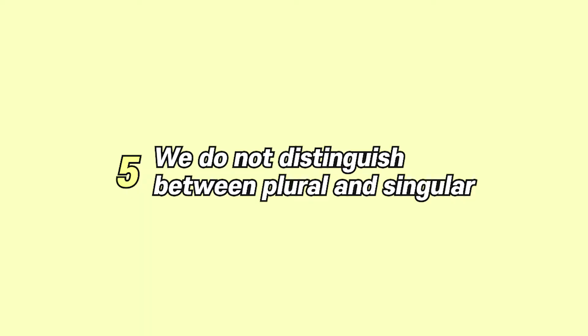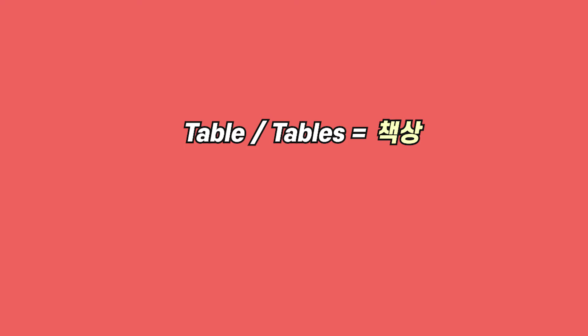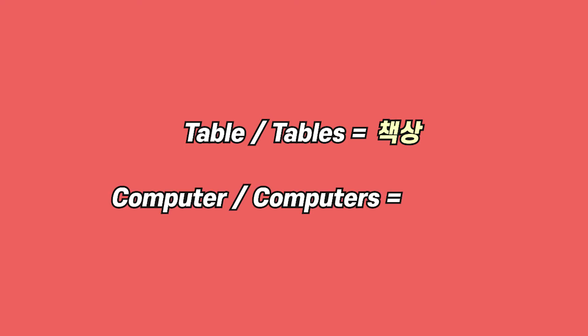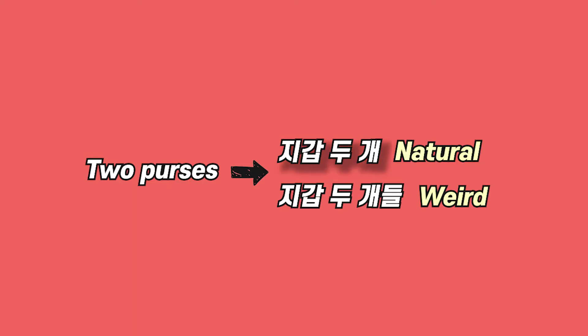Number 5: We do not distinguish between plural and singular. Sometimes, a word with the plural particle 들 sounds weird even though the noun is plural. For example, table and tables are both 책상 in Korean, and computer and computers are both 컴퓨터. If you say 'I have two wallets,' in Korean '나 지갑 두 개 있어' sounds more natural than '나 지갑 두 개들 있어' — 지갑 두 개들 sounds weird. That's a big no-no.